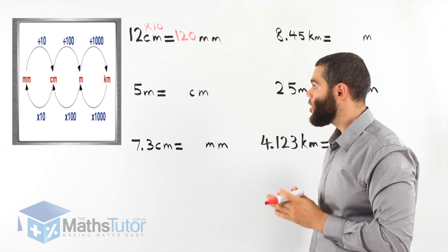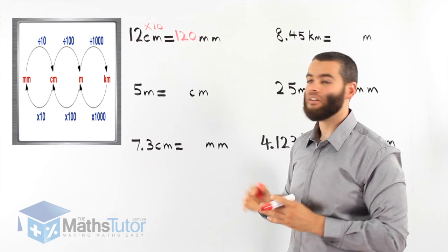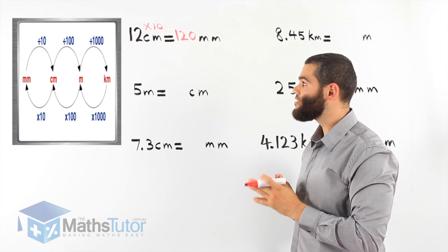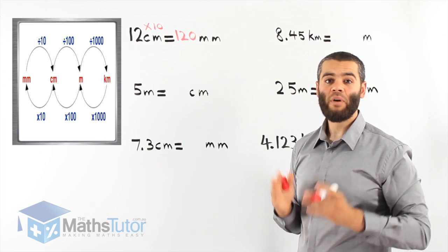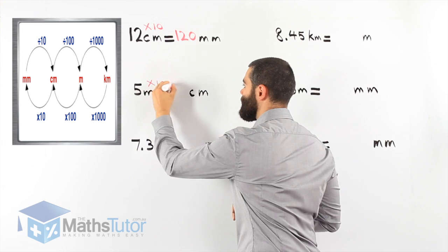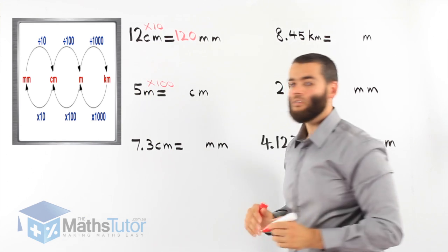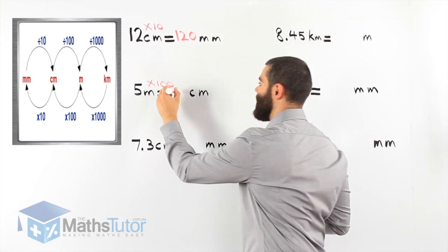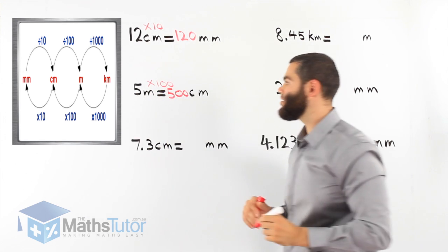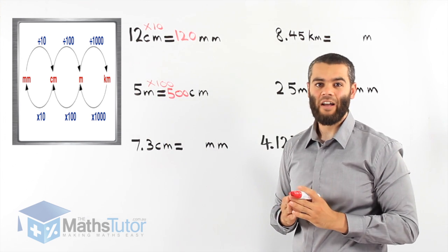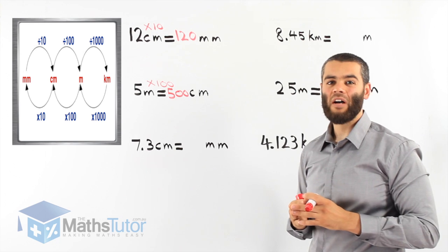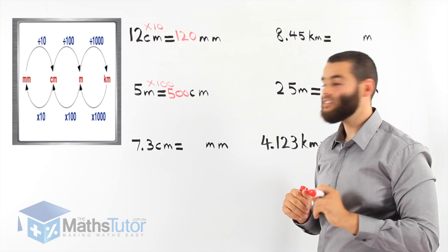Another example: we're going from metres to centimetres. We look at our diagram — from metres to centimetres, we times by 100. 5 times 100 equals 500. So, there are 500 centimetres in 5 metres. 5 metres is exactly the same as 500 centimetres.